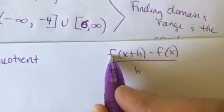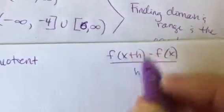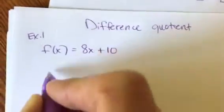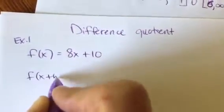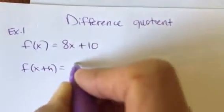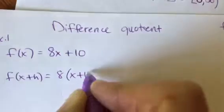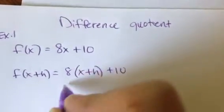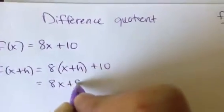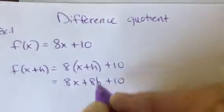So remember, in your function, wherever you see an x, you're going to plug in x plus h. So right here, I'm going to find this f of x plus h. Wherever you see an x, I'm going to plug in x plus h. So that's this. So this gives me 8x plus 8h plus 10.